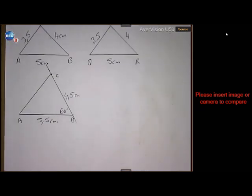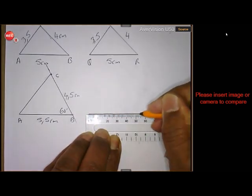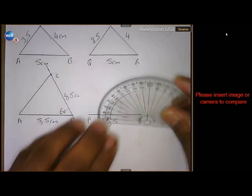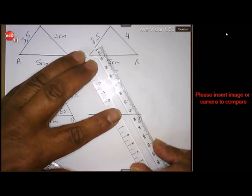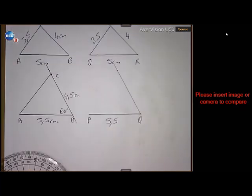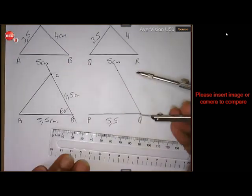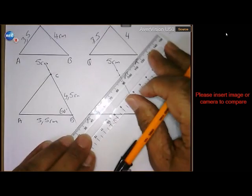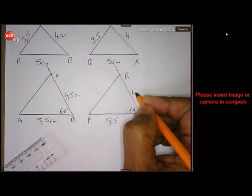Then you must do triangle PQR. PQ is 5.5 centimeters. Angle Q is also 60 degrees. And the length of QR is also 4.5, like the previous one. So this should be my R. This angle is 60 degrees and this is also 4.5.